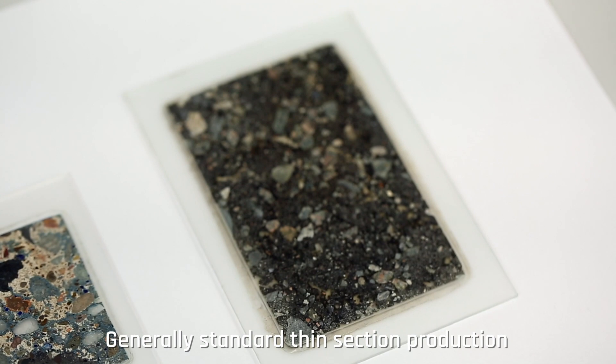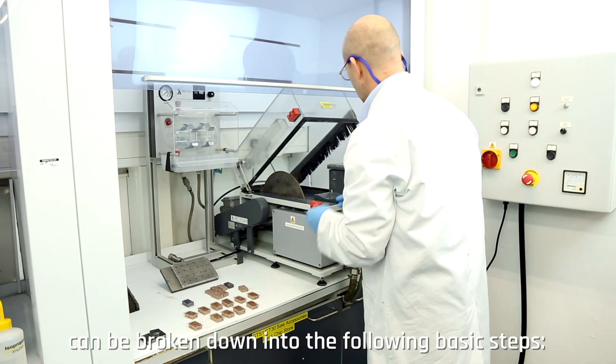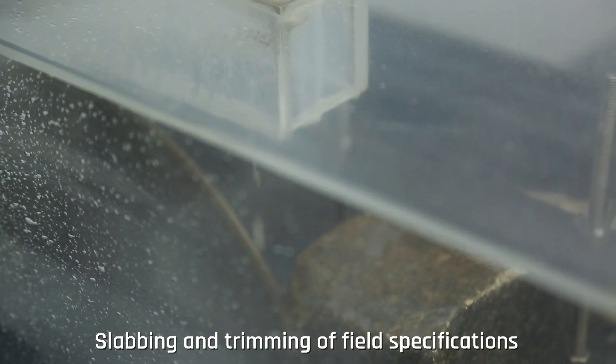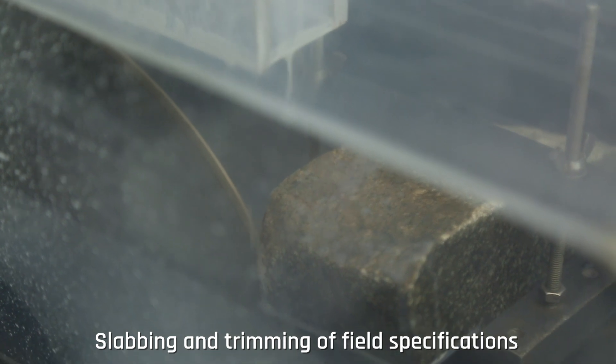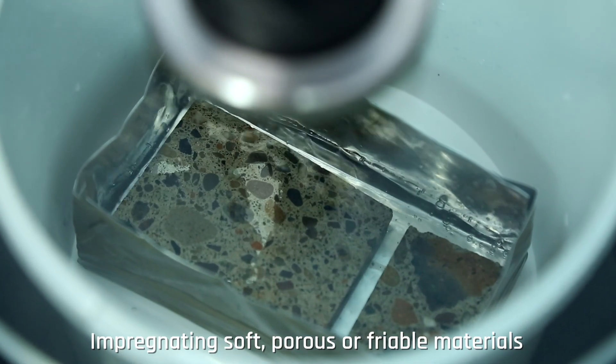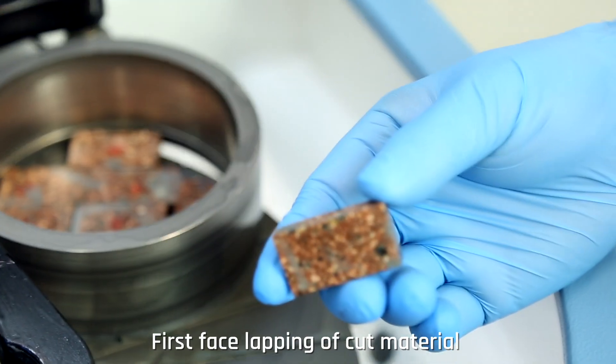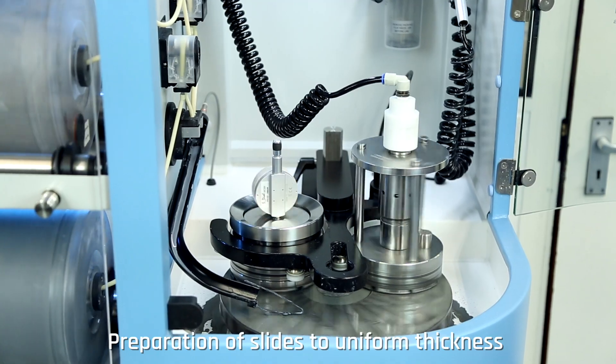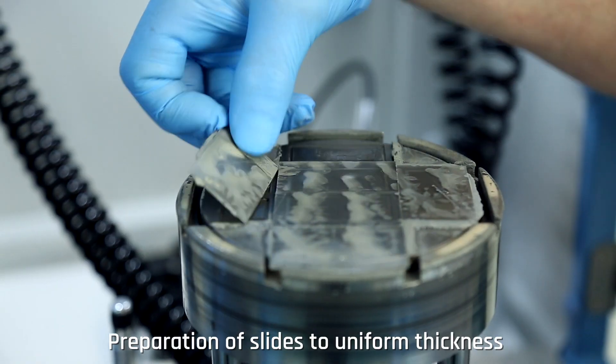Generally, standard thin section production can be broken down into the following basic steps: slabbing and trimming of field specifications, impregnating soft, porous or friable materials, first-face lapping of cut material, and preparation of slides to uniform thickness.